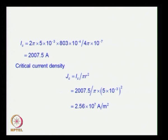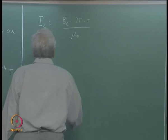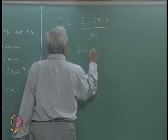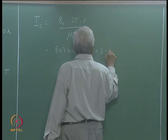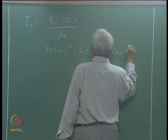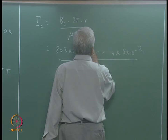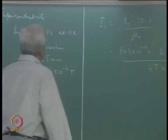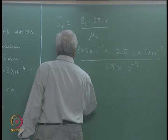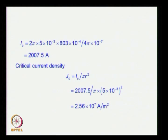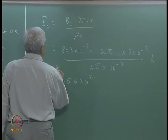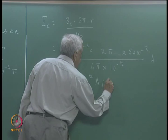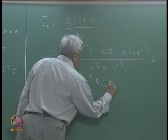We simply substitute the values: radius is given as 5 millimeters, divided by 4π × 10⁻⁷. The critical current works out to be 2007.5 amperes, and the corresponding critical current density is also calculated.